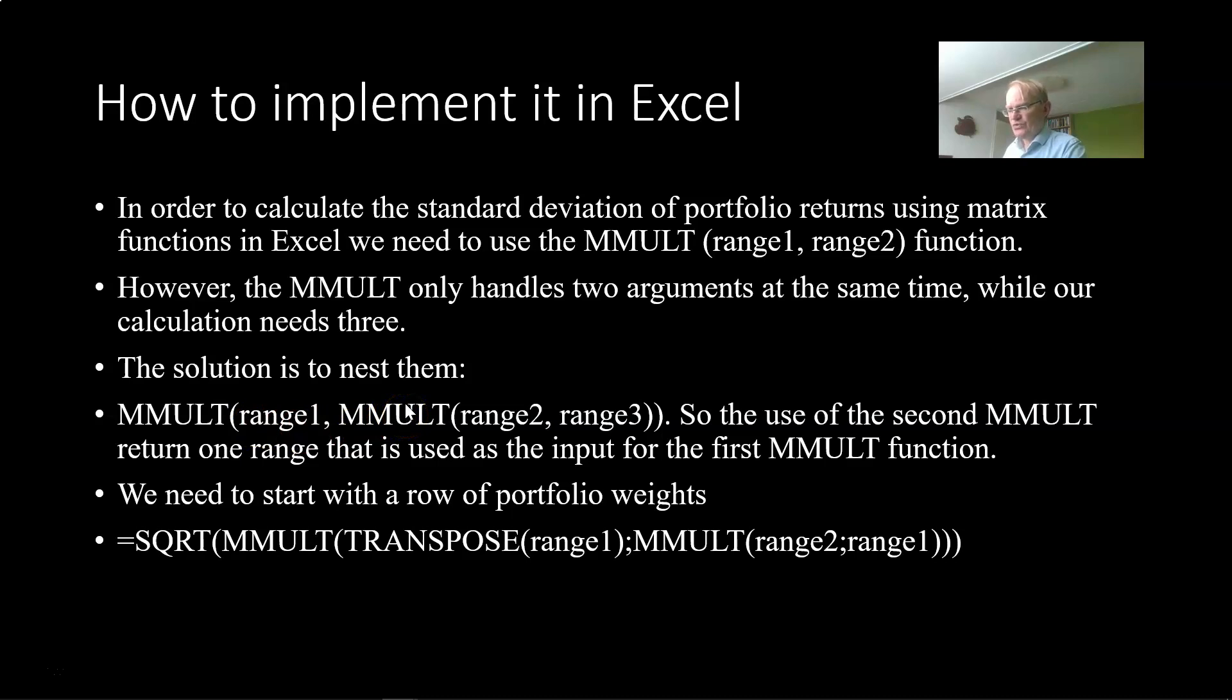If we merge that all together we need to start with a row of portfolio weights. This will be the covariance matrix and this will be a column of portfolio weights. If you want to know more about matrix multiplication and the requirements for that, I have a separate video on that. So just accept it as it is here.